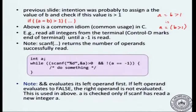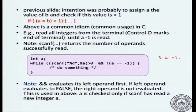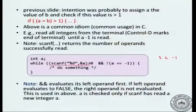One particular way in which such an expression can be seen — we have already seen such an example — is: read all integers from the terminal until a minus 1 is read. Suppose the input is of the form 3, 2, minus 1. scanf returns a value which is the number of tokens it was successfully able to read. So as long as you have correctly read an integer and the integer is not minus 1, then you do a particular loop.